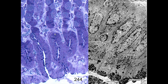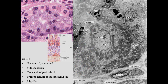Chief cells are distinct from parietal cells. Going deeper into the gastric pit you encounter parietal cells. An electron microscopic view of a parietal cell shows a host of mitochondria, which produce the energy needed to pump chloride and hydrogen ions into the secretory canaliculus. The secretory canaliculus is a projection of the lumen deep within the parietal cell itself.